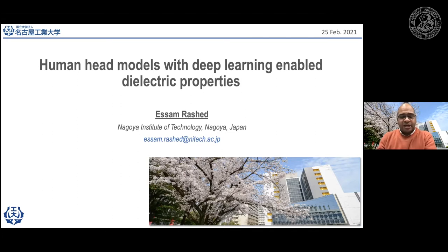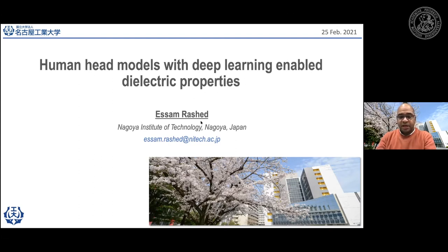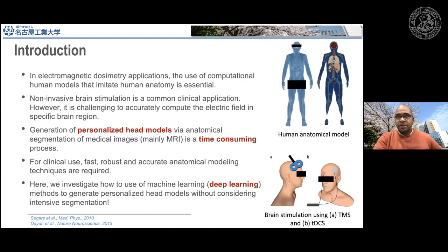This talk is about the generation of human head models using deep learning technology. The main application is related to electromagnetic dosimetry. We assume that we would like to sense some physical properties, such as doing brain stimulation of some patient. The main application is based on electromagnetic signals, and we would like to understand how the stimulation is affecting different tissues, especially in the brain.